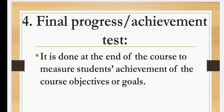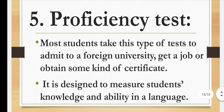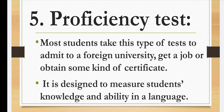The final achievement test is done at the end of the course to measure students' achievement of the course objectives — the teacher at the end tries to find out how much the child has achieved and learned. Next is the proficiency test — most students take this type of test to gain admission to a foreign university, get a job, or obtain some kind of certificate. It is designed to measure students' knowledge and ability in a language — basically, how proficient and able they are.